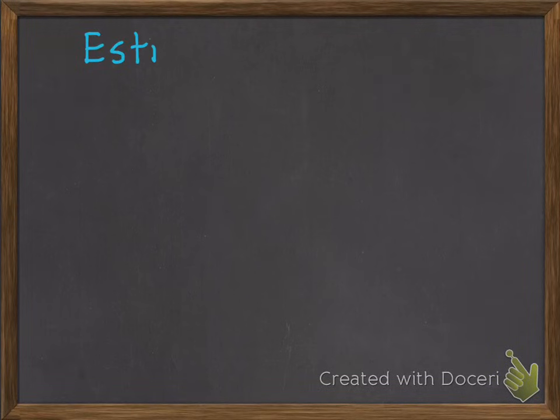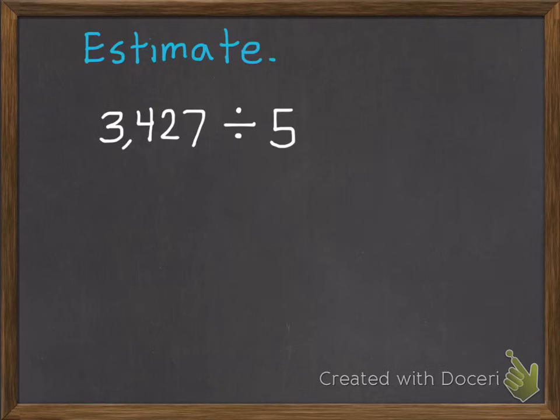So now that you have that, here's my first real example. 3,427 divided by 5. Once again, we're going to use compatible numbers.